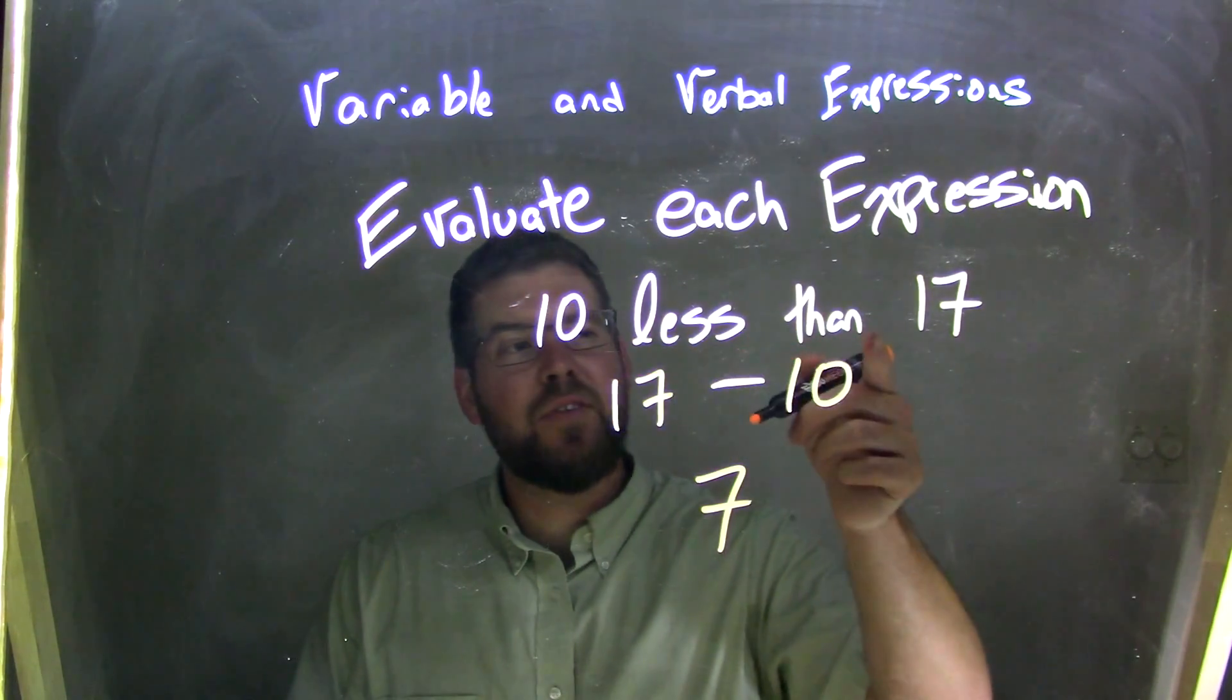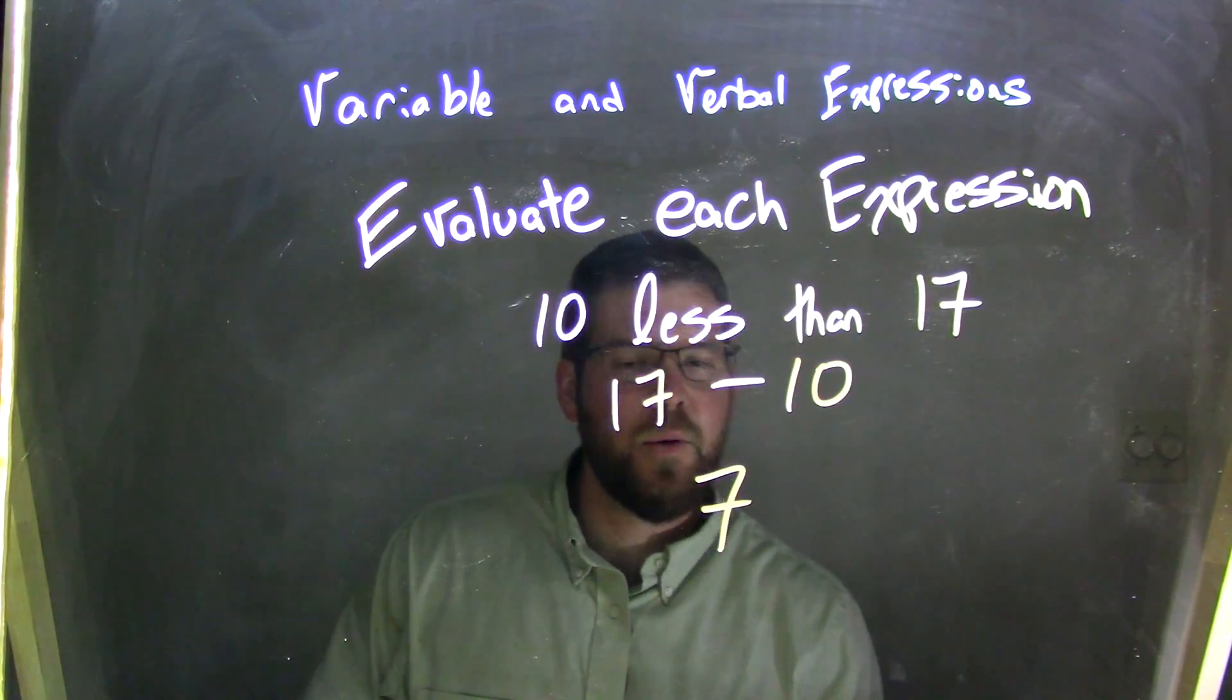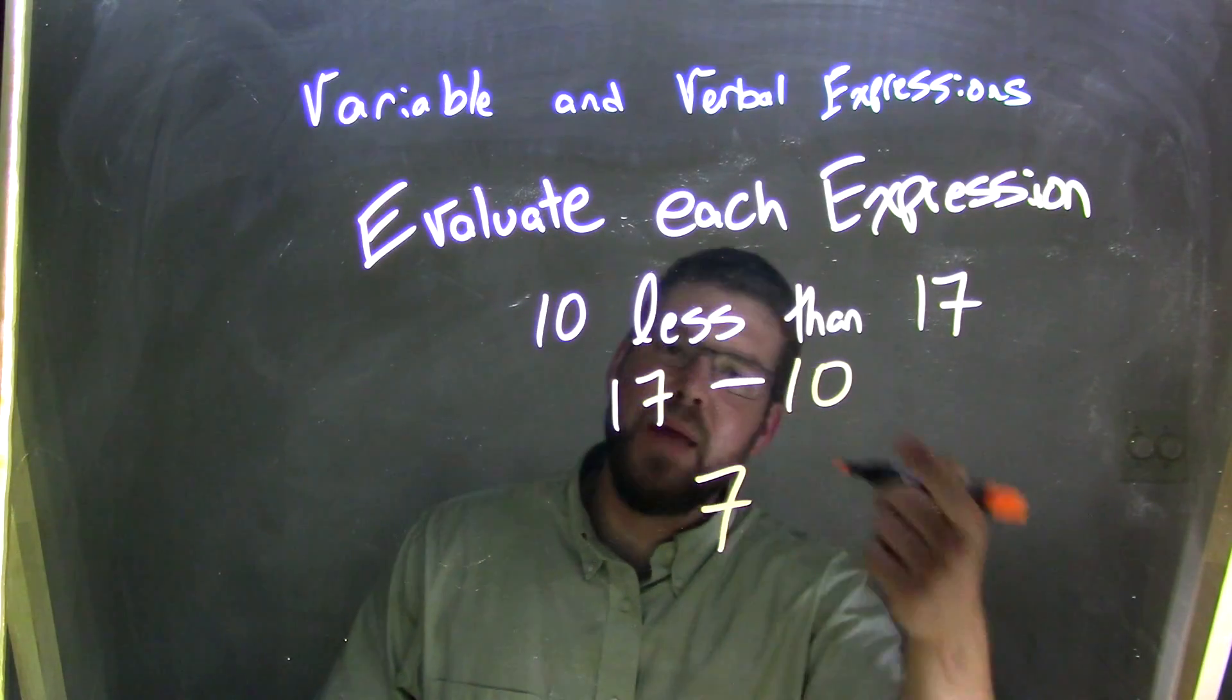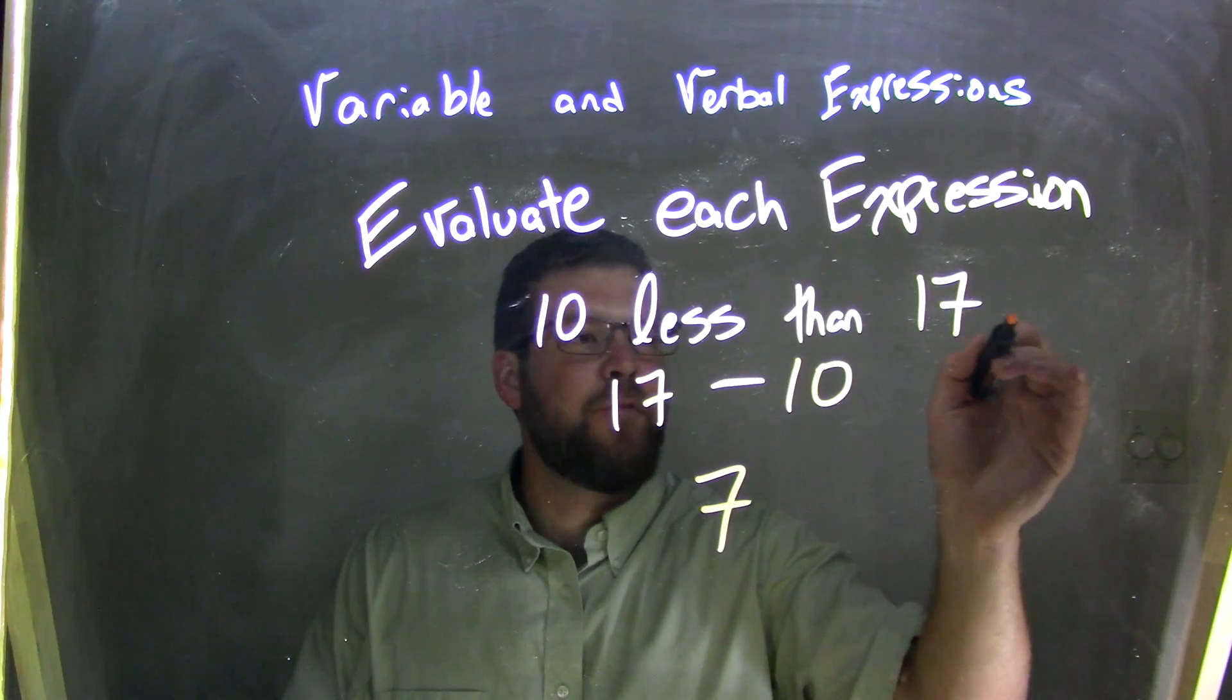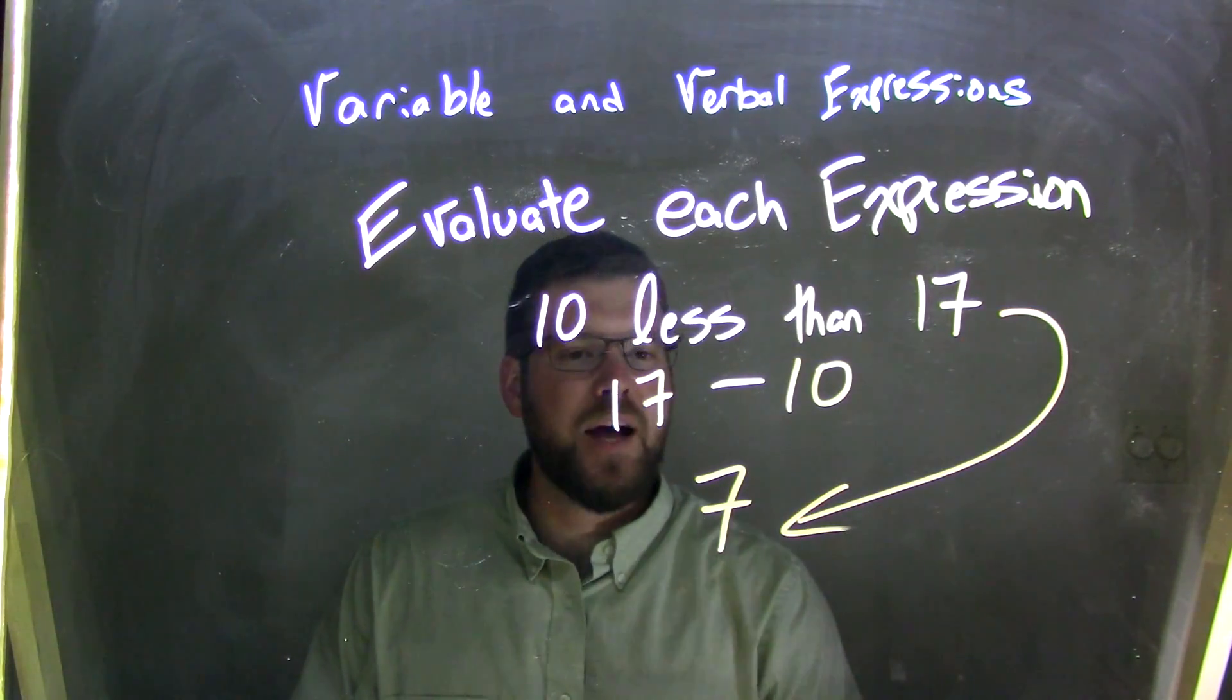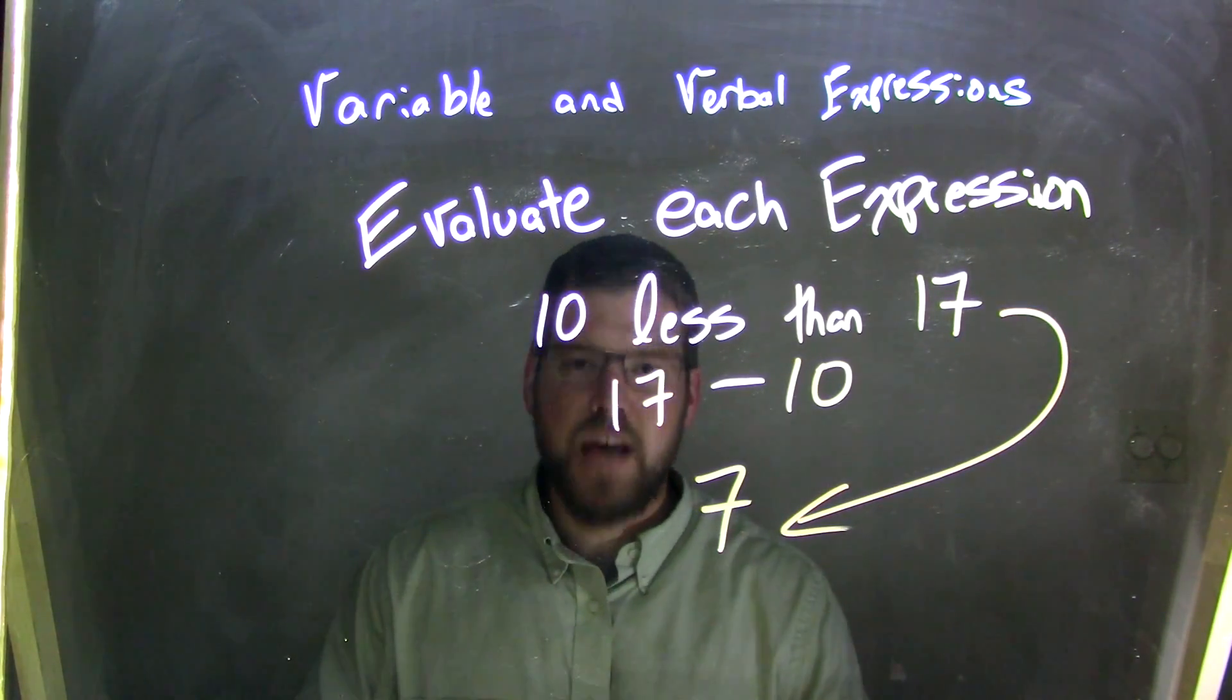So if we take 10 less than 17, we're taking that 17, taking 10 from that, 10 less than that, which gives us 7. So here's our verbal expression that we're evaluating, and it becomes 7.